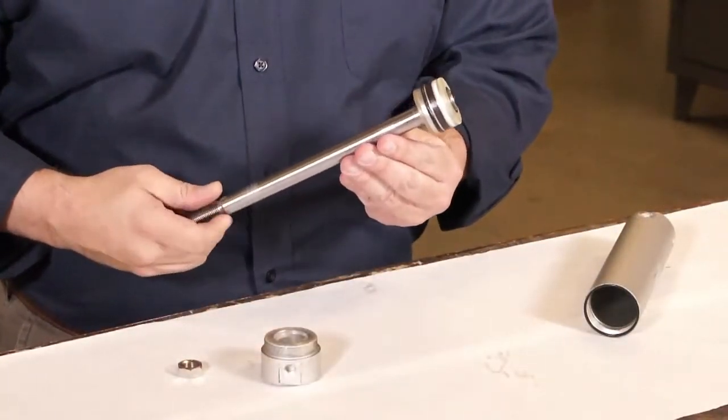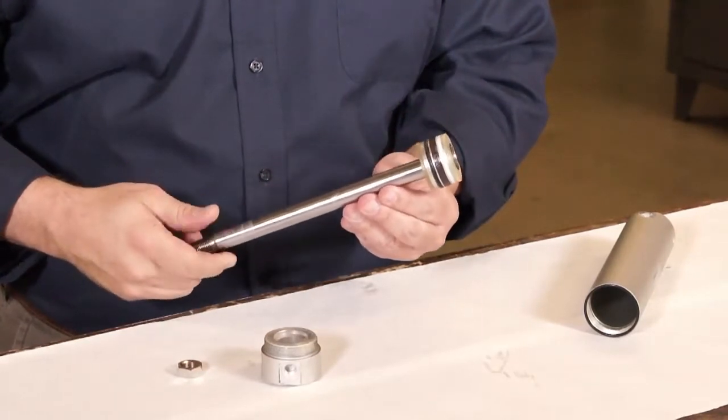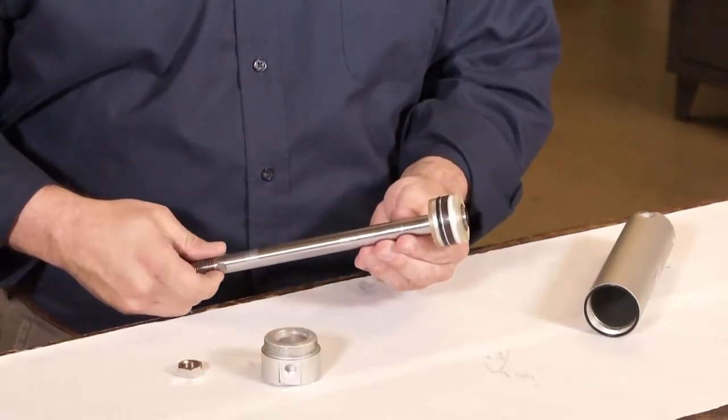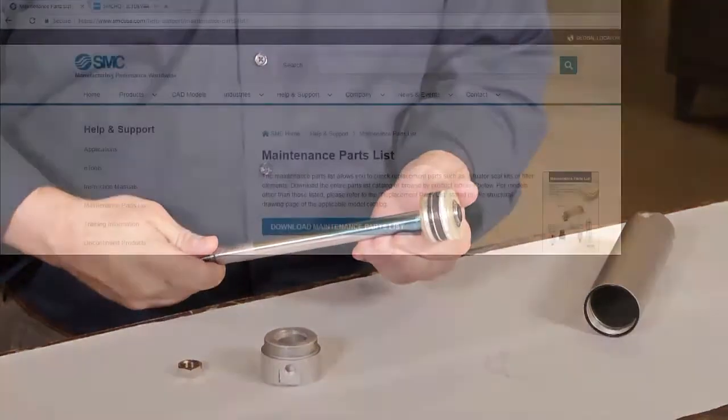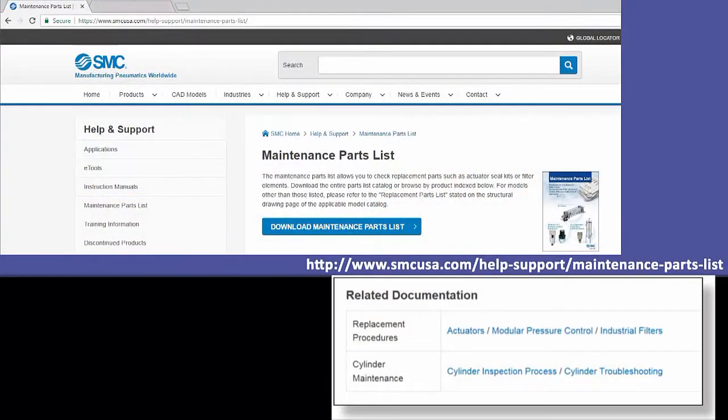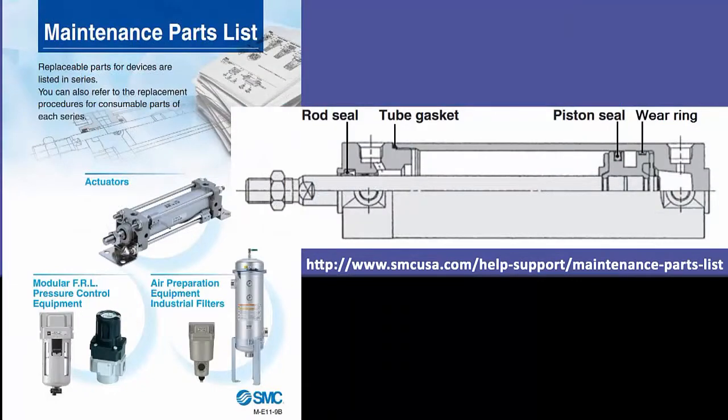Next, check the seals. Is there uneven wear? Swelling, drying, cracking, flattening? If there are any issues, then you need to do more than just rebuild the cylinder. Check out our web reference for troubleshooting actuators.